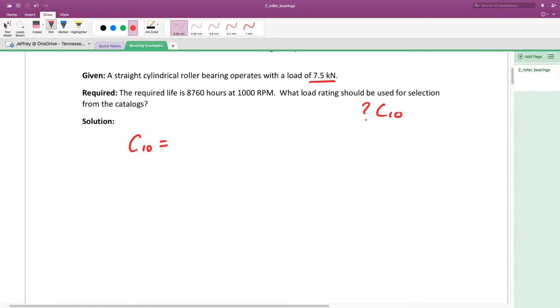C10 is given as a relationship to the design load FD, design life in hours LD, and design speed. 60 is a conversion factor. We have the rated load, rated speed, and 60.